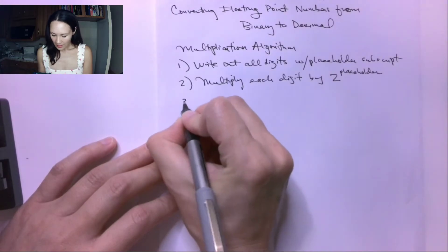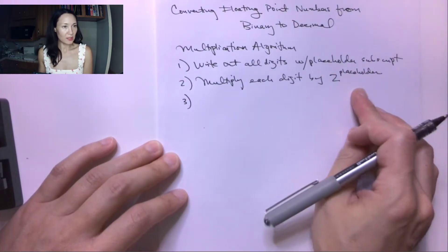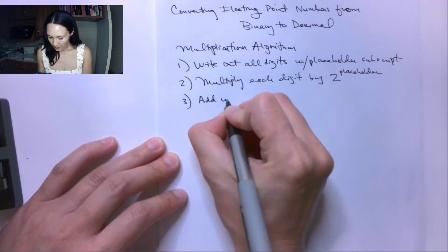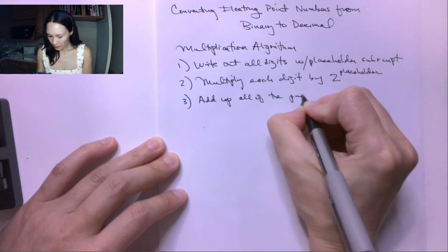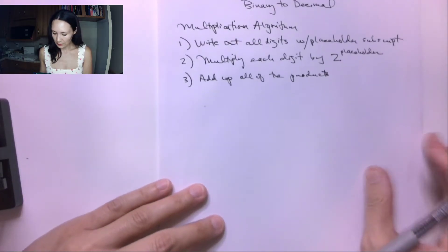And then the last thing is all these multiplications, we just take all those results and add them all together. Add up all of the products, and that will give us our conversion to decimal.